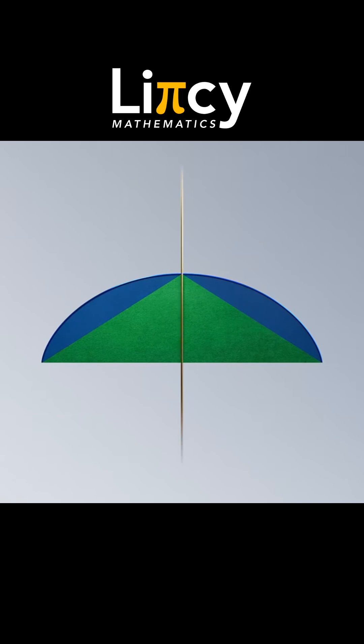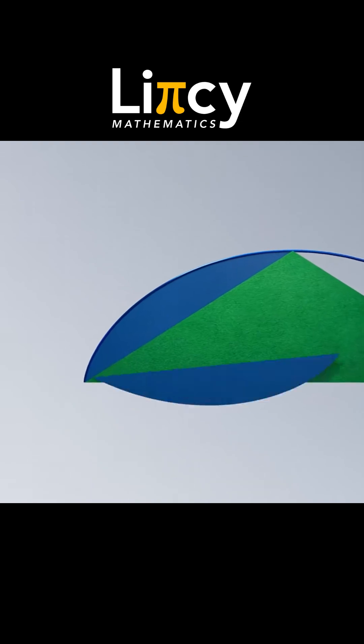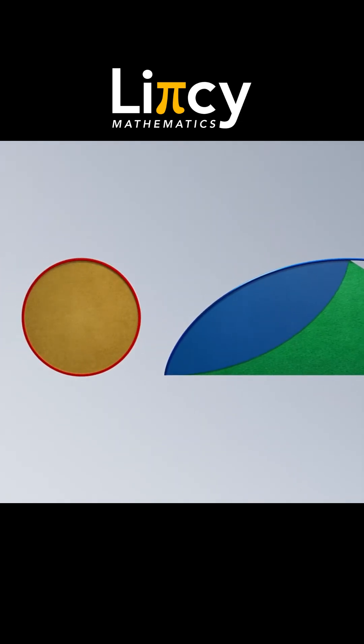We could chop this triangle in half and refit the area to make a rectangle measuring 2 radii by pi radii. The area is 2 times r times pi times r, which gives us 2 times pi times r times r, or 2 pi r squared.